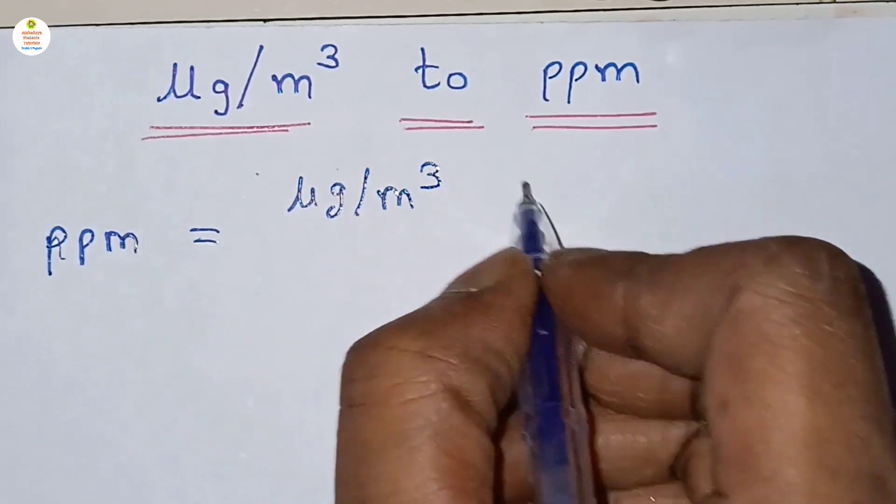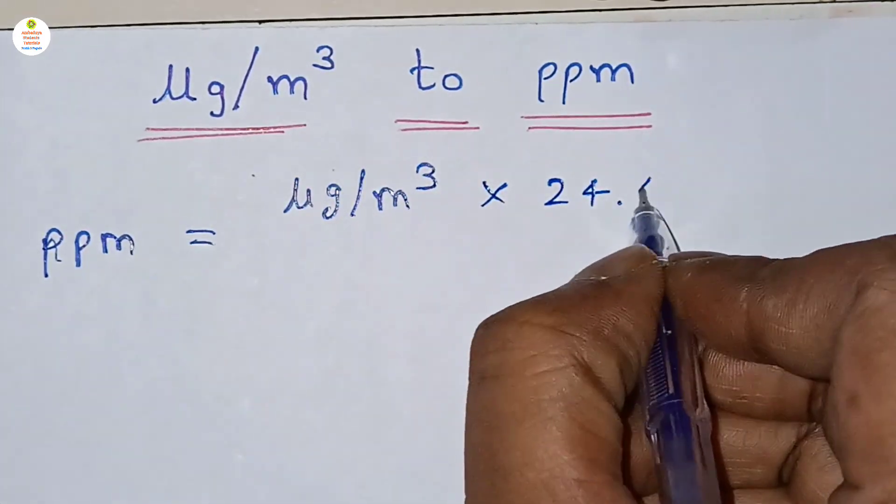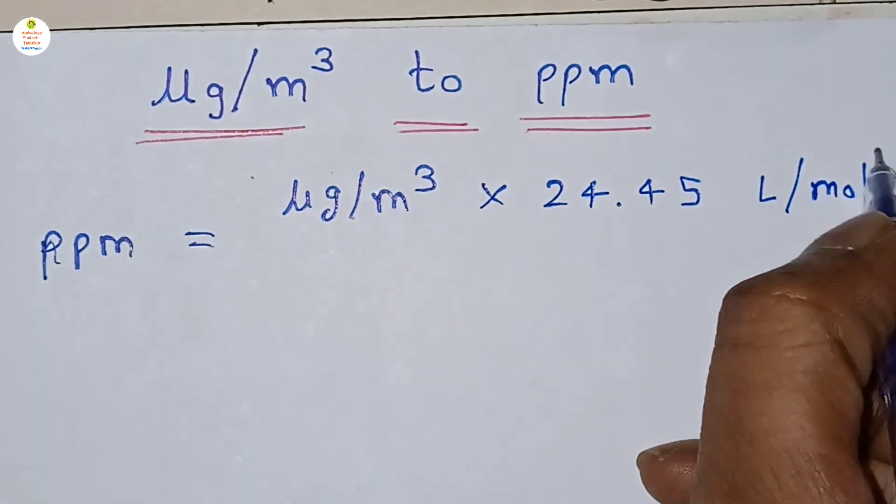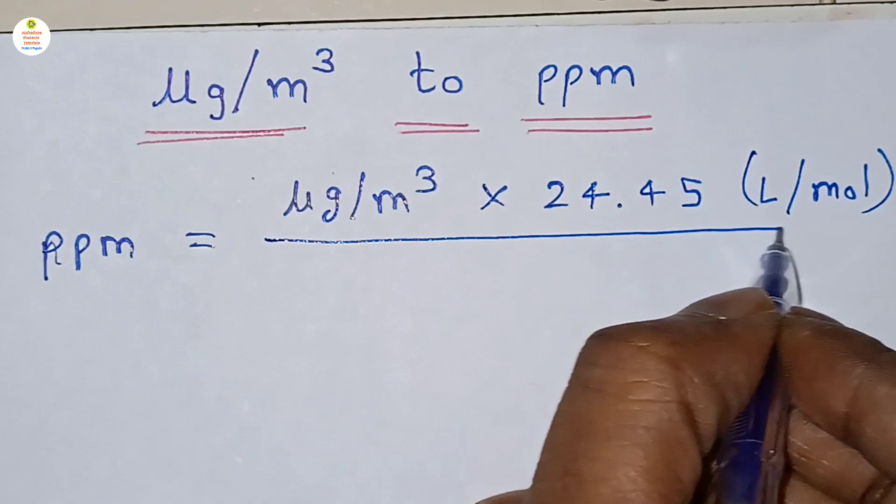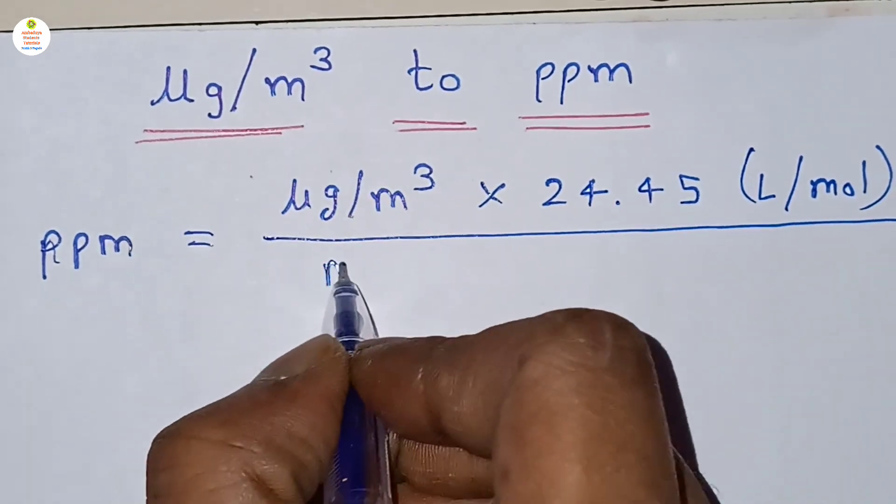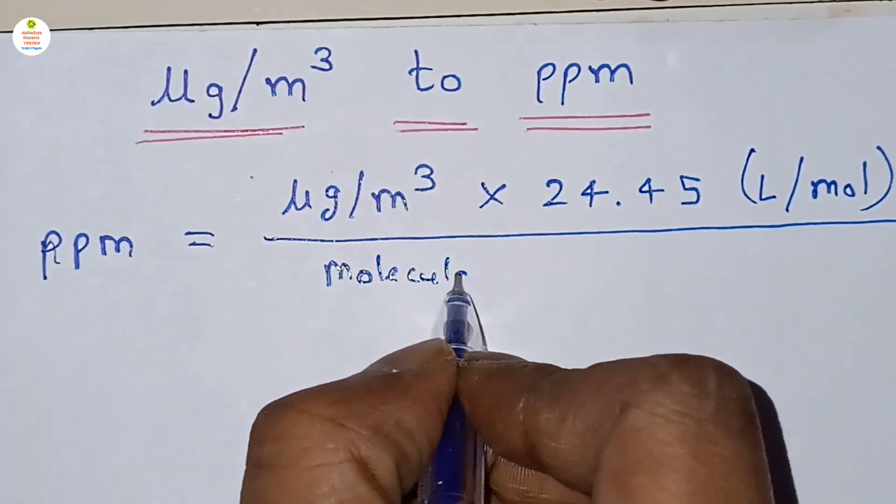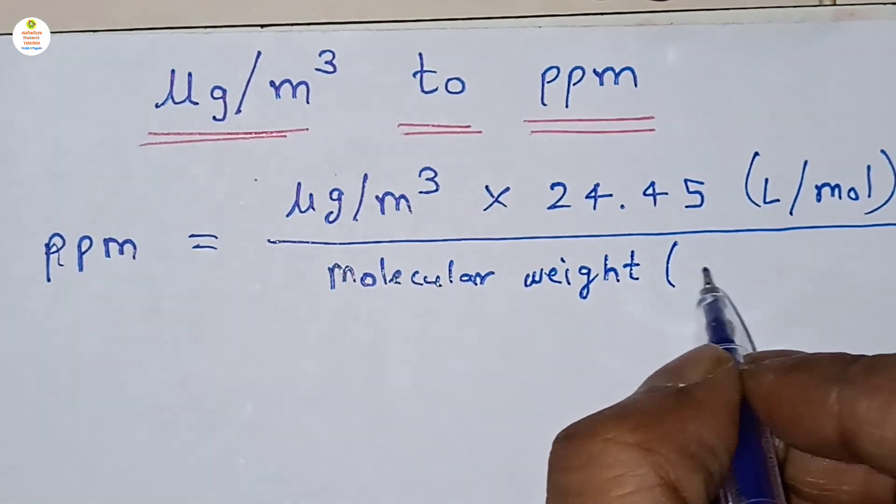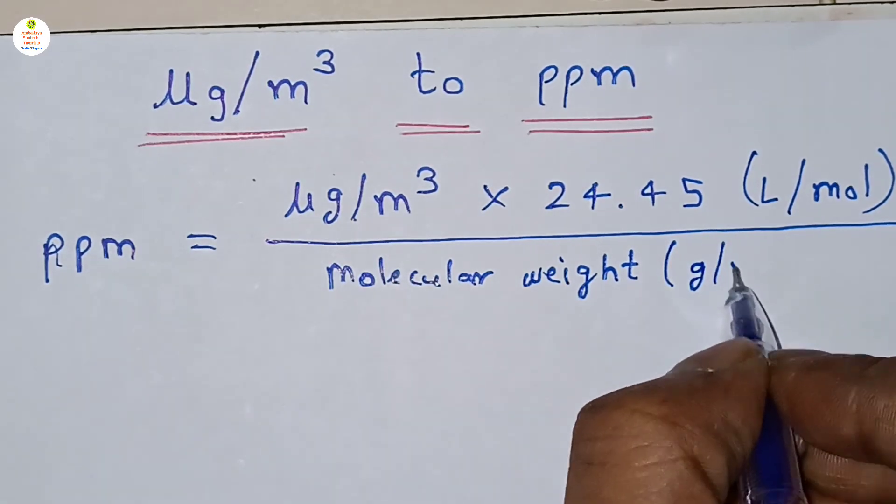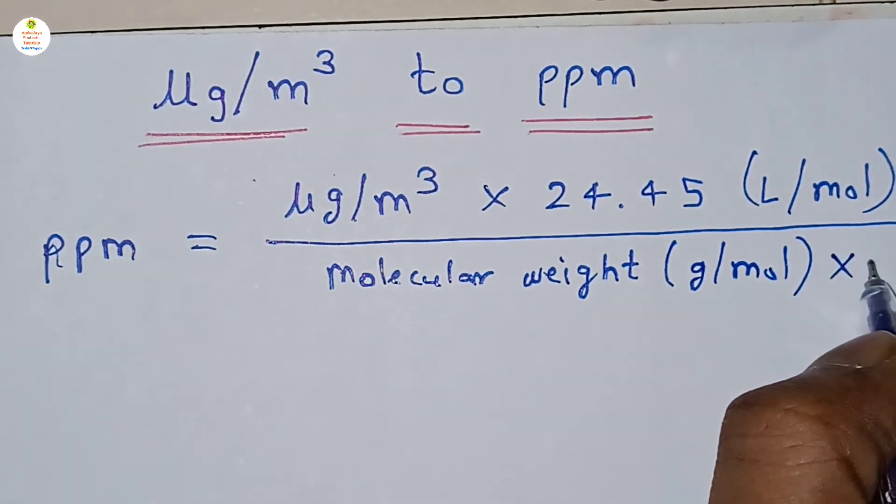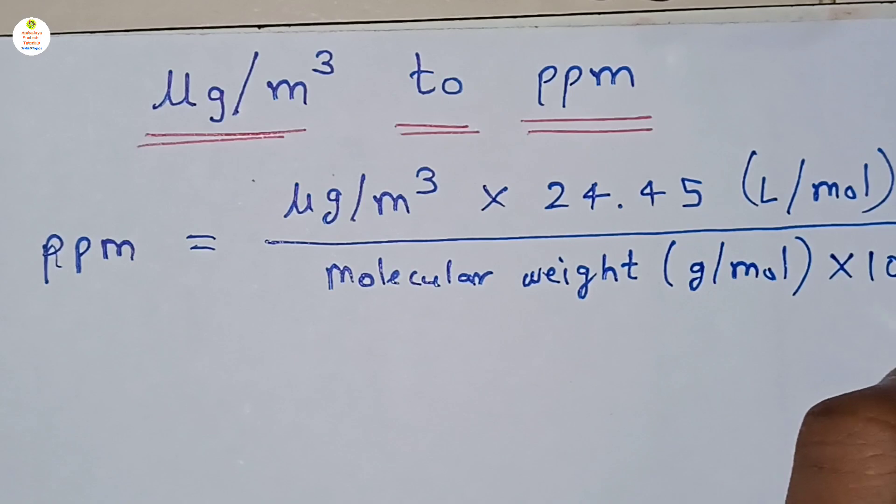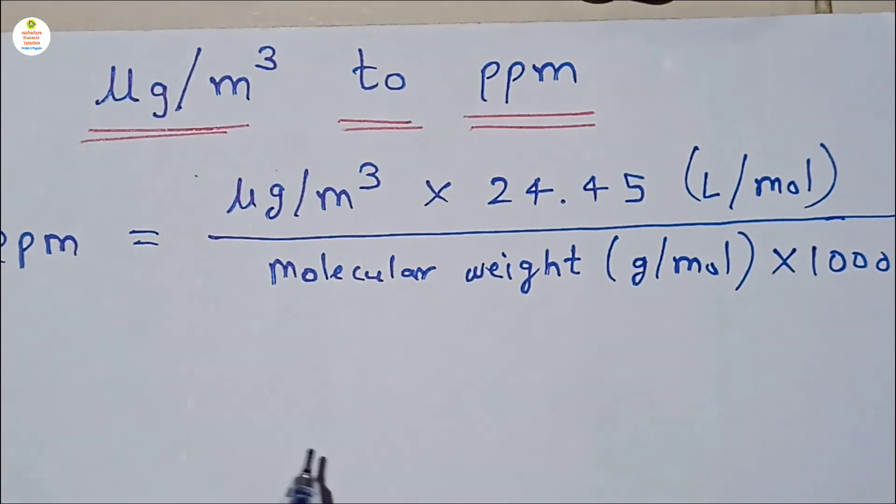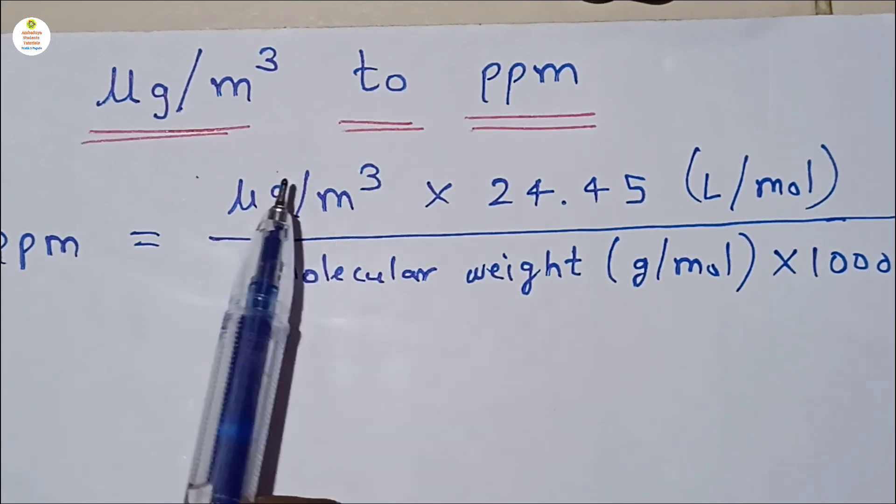Into 24.45 liter per mole, this value, and divided by molecular weight which is in gram per mole into 1000. Now let's see what is this formula. We need to convert this microgram per meter cube into ppm.